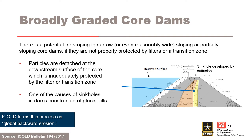ICOLD Bulletin 164 from 2017 refers to a process termed global backward erosion, in which stoping can lead to development of a near-vertical cavity within broadly graded silty sand and gravel non-plastic cores of embankments, leading to sinkholes. This term is not used by the U.S. Army Corps of Engineers. Sinkholes are a product of suffusion. Filters can be internally unstable, resulting in loss of core segregation for particle retention, causing the core to erode into the filter, leading to stoping and collapse of overlying rock fill, manifested as a sinkhole. The core can also be internally unstable.